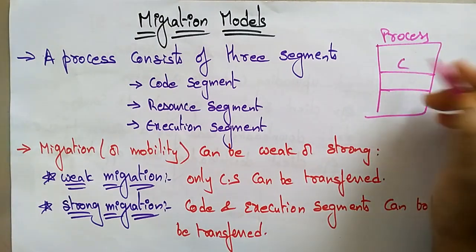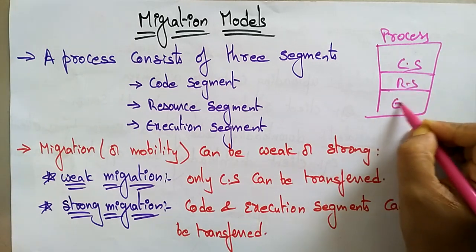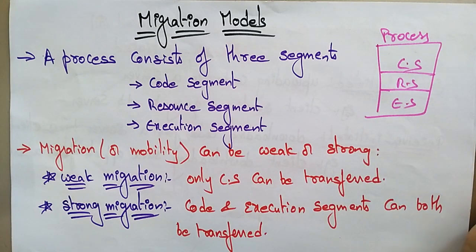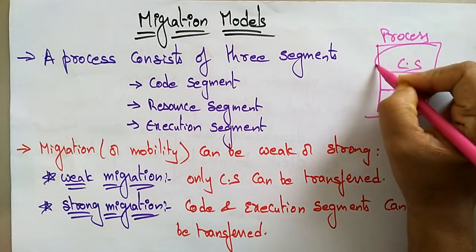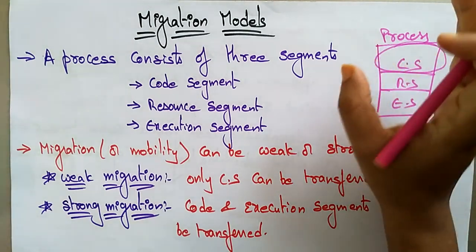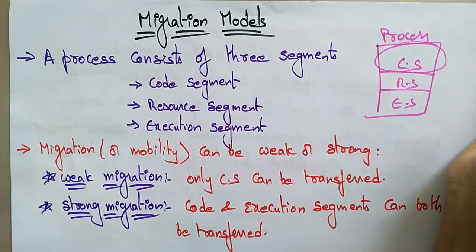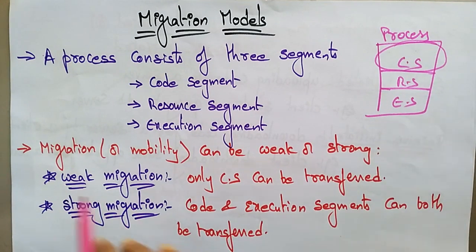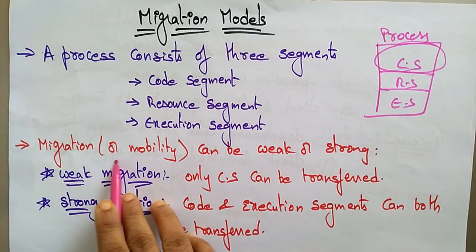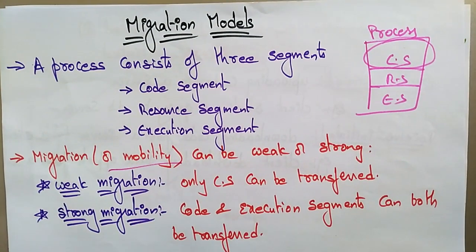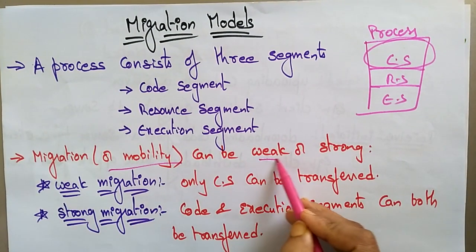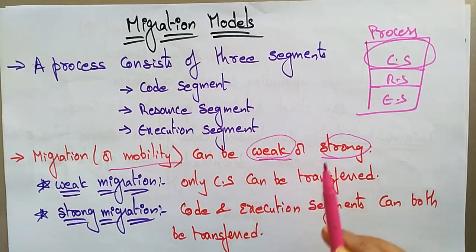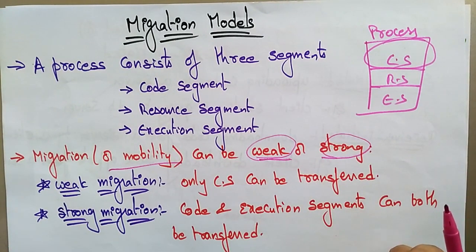The three segments are: the core segment, the resource segment, and the execution segment. The core segment contains the code that has to be migrated — you can migrate the complete code or the process itself. Migration, also called mobility, can be weak or strong, depending on whether it is the code or the process being transferred.